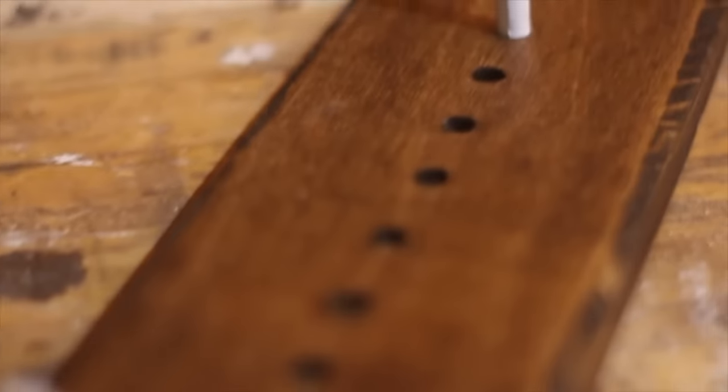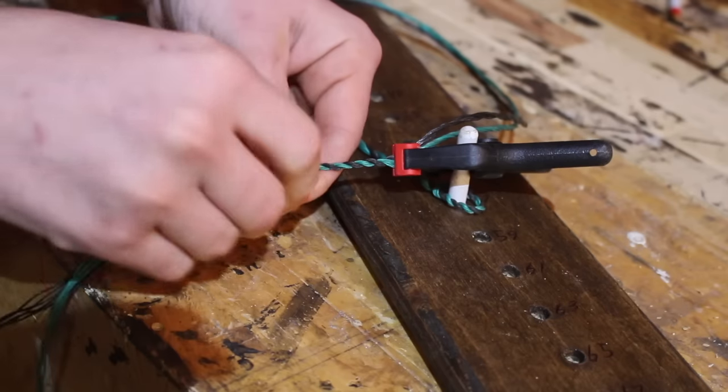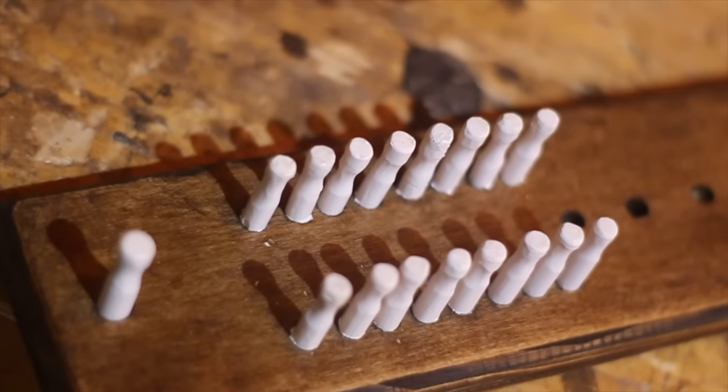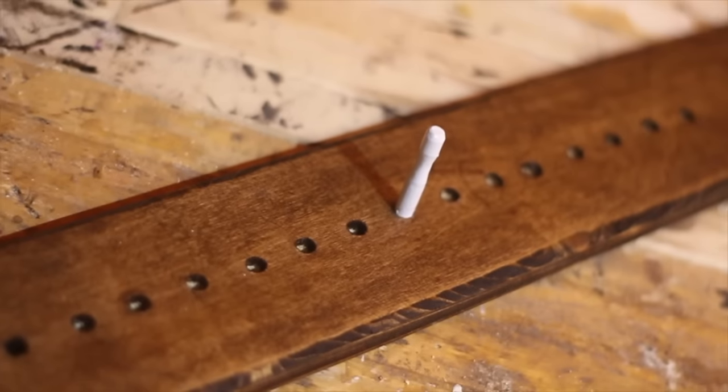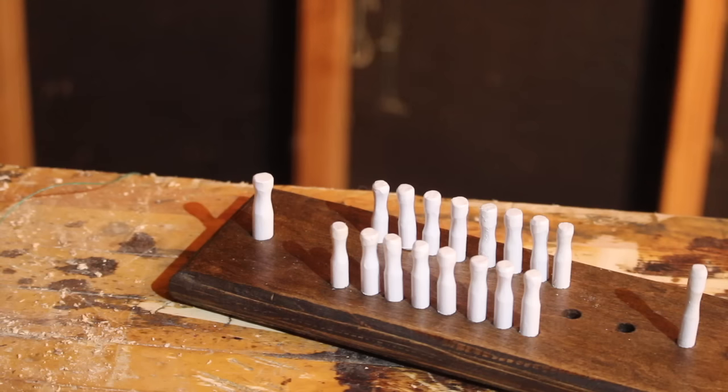On the last video we made this really cool bowstring jig. In today's video we are going to make a Flemish twist string while using this jig. We're going to find out all the ins and outs and how to set it up properly.